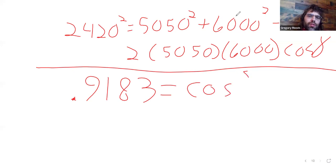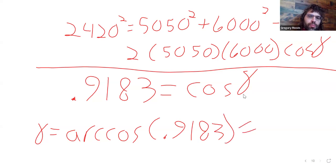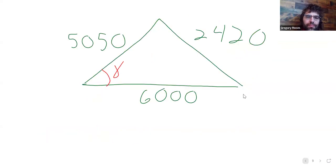We perform our algebraic simplification, and we use the arc cosine. Gamma is the arc cosine of this, which is 23.3 degrees.